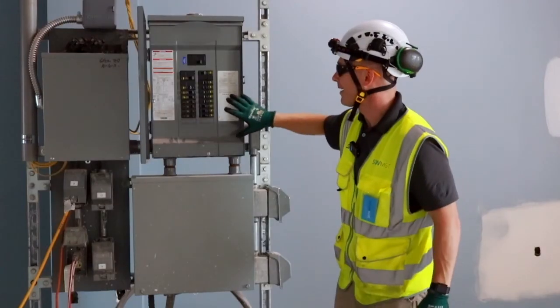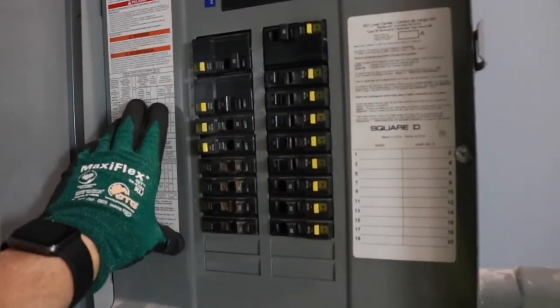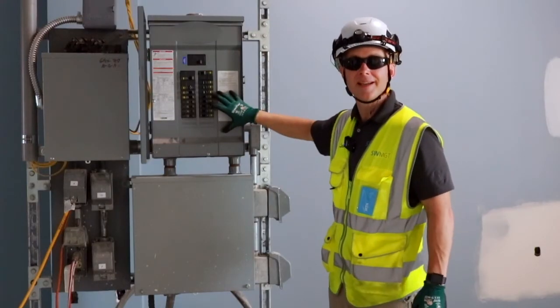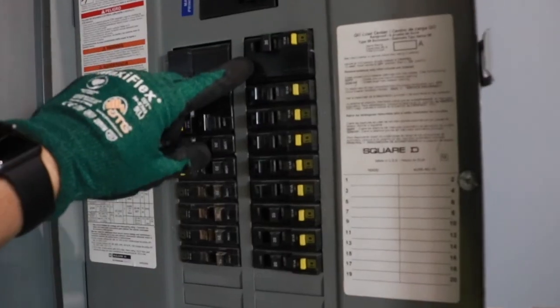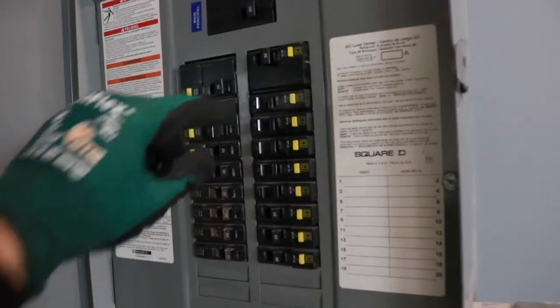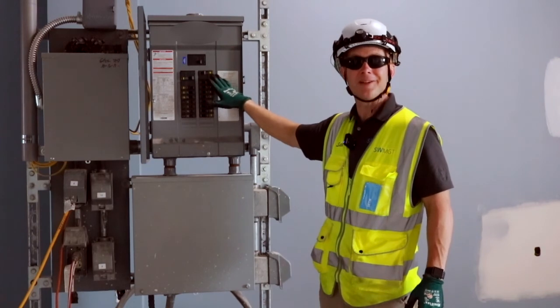Practice four, they have a dead front cover protecting anyone from accidental contact to the insides of this panel. Practice five, they've installed blanks to protect the knockouts from accidental exposure to the inside of the panel.